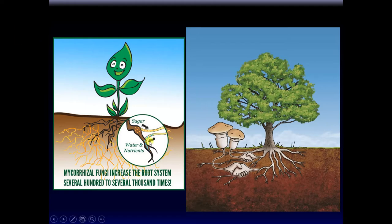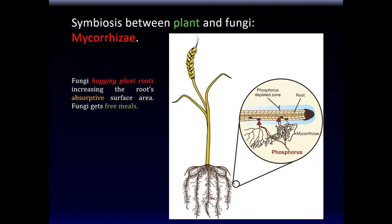The fungus allows the plant to increase its absorptive area for water and nutrients that it needs. And as a toll — nothing is free — the plant makes glucose and the fungus gets some of that glucose from the plant. They both benefit from it. That's a symbiotic relationship. Symbiotic between plant and fungi is called mycorrhizae: fungi hugging plant roots increase the root's absorptive surface area, and fungi get free meals, as you can see here.